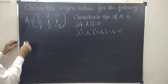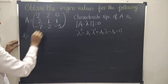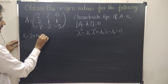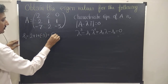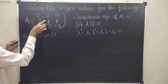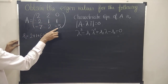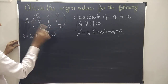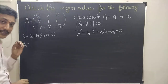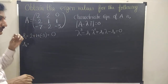What is S1? S1 is the sum of the leading diagonal elements. So, 2 plus 1 plus (minus 3) equals 0. S1 is the sum of the leading diagonal elements: 2 plus 1 plus minus 3 equals 0. What about S2? S2 is the sum of the minors along the leading diagonal elements.